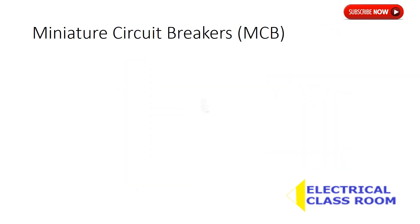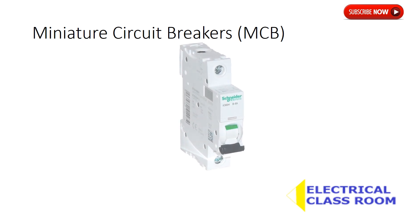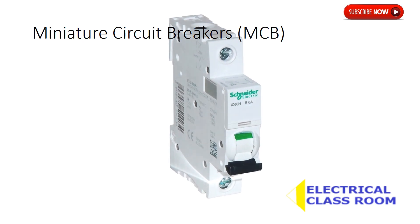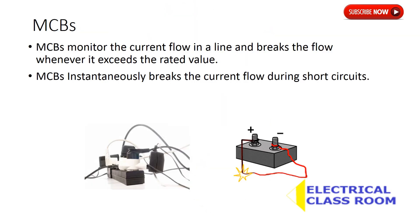Miniature circuit breakers, also known as MCBs, can protect a circuit from overloads and short circuits. MCBs monitor the current flow in a line and break the flow whenever it exceeds the rated value. MCBs instantaneously break the current flow during short circuits.